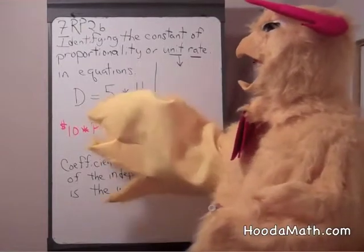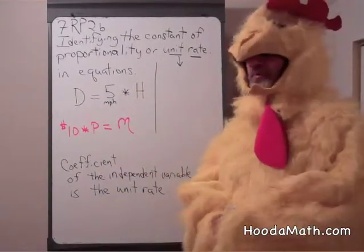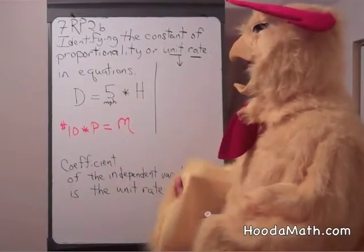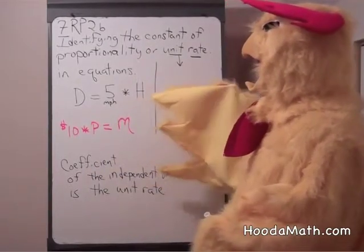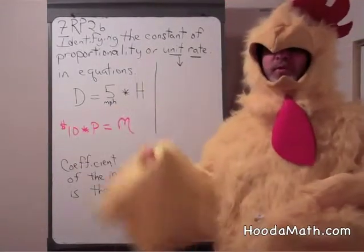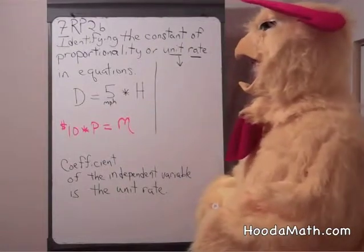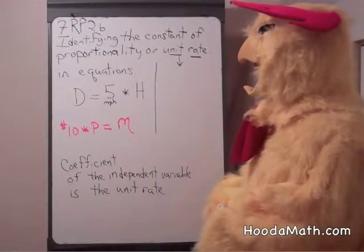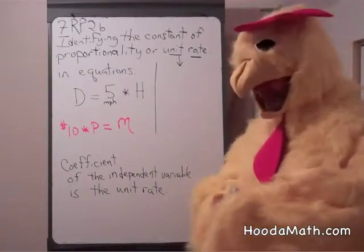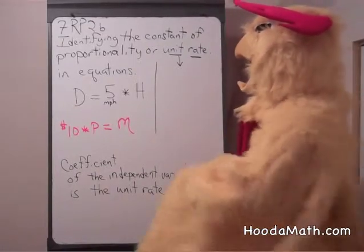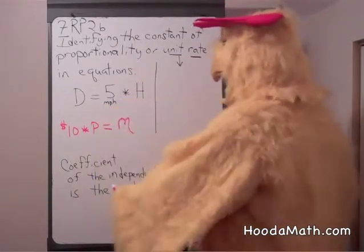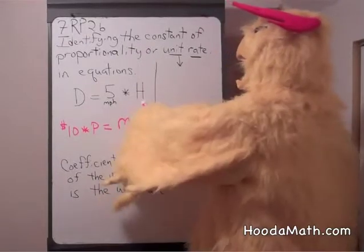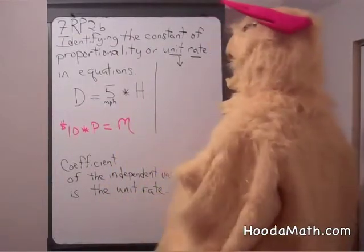In this case, we're talking about a person jogging five miles per hour for a certain amount of hours, and what their distance is. D equals five times hours. The coefficient of the independent variable, this is the independent variable, is the unit rate.